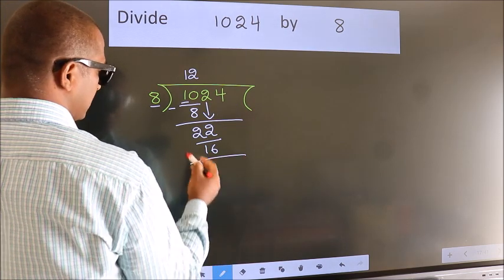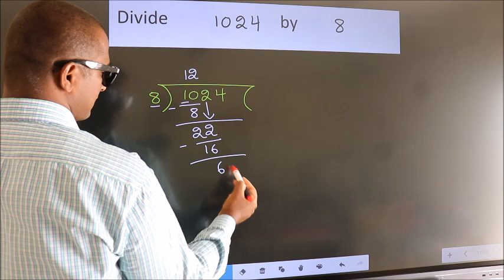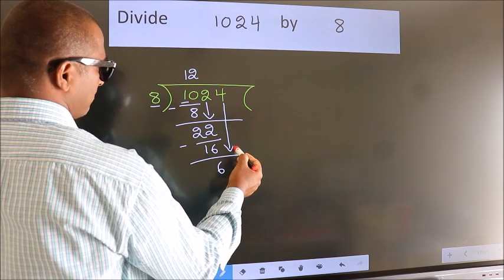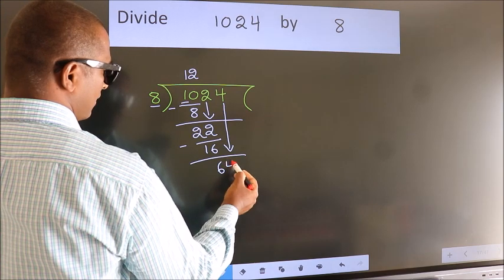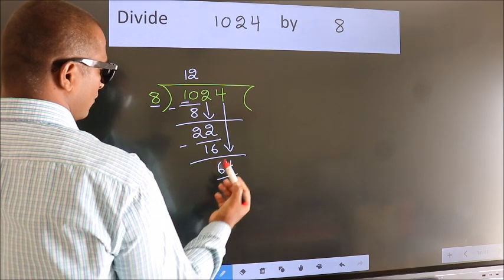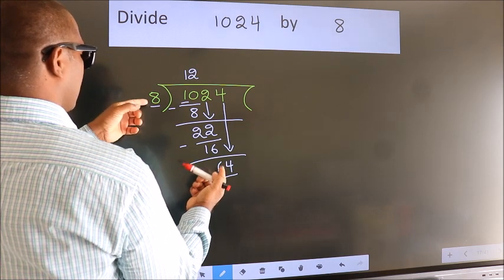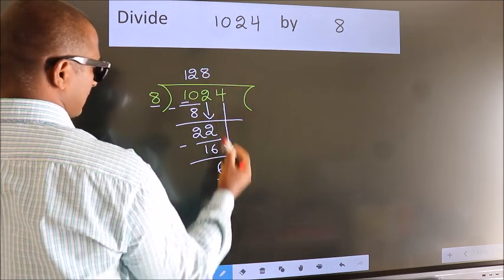Now we subtract. We get 6. After this, bring down the beside number. So, 4 down. So, 64. When do we get 64? In the 8 table: 8 8s 64.